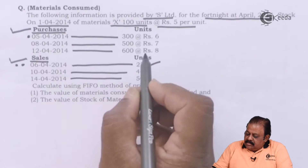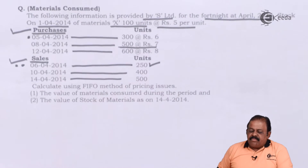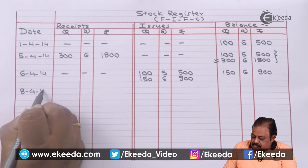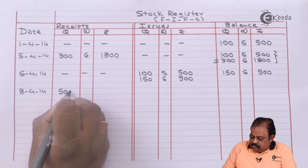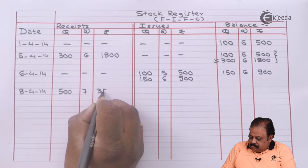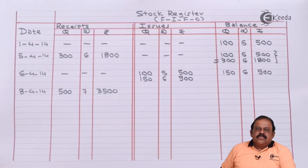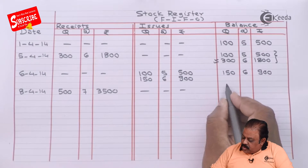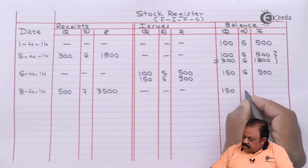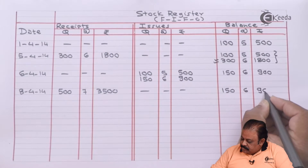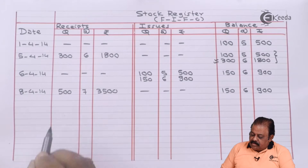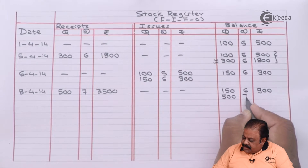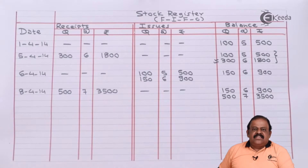On 8th April there is a purchase of 500 units at the rate of Rs.7, so the purchase value is Rs.3500. While recording the closing stock, we first record the old stock of 150 units at Rs.6 (amount Rs.900), then add the fresh purchase of 500 units at Rs.7 (amount Rs.3500).